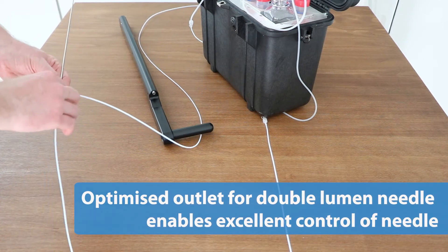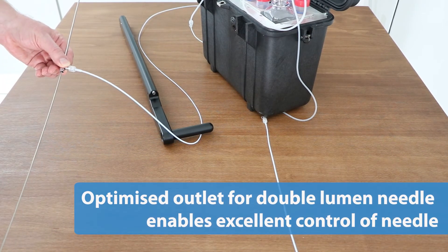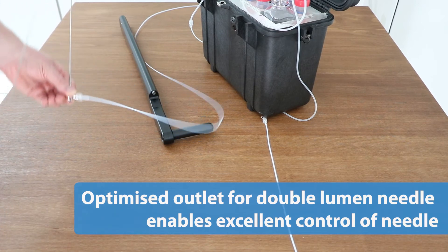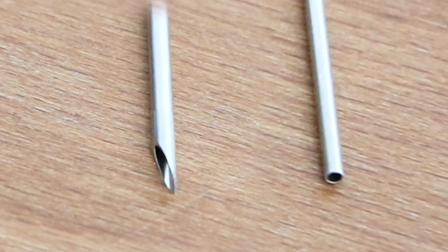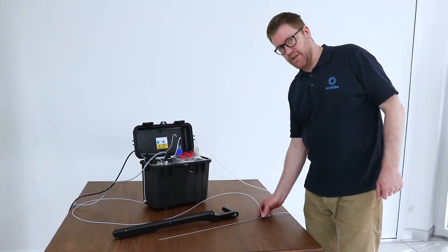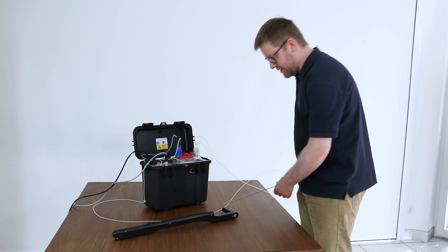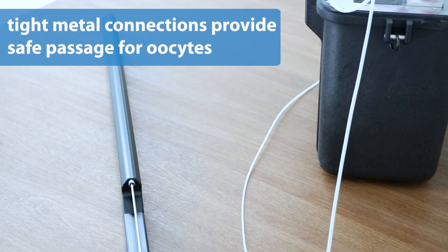The needle is a double lumen needle with the inner part for aspiration and the outer part for injection. It is entirely made of steel and can be sterilized easily. The needle is inserted into the needle guide and becomes visible on screen during the procedure.